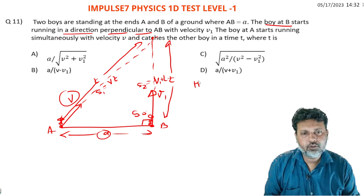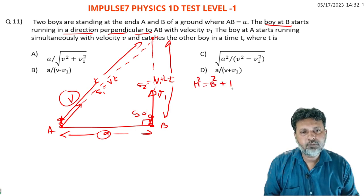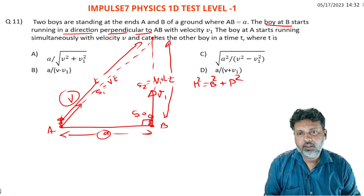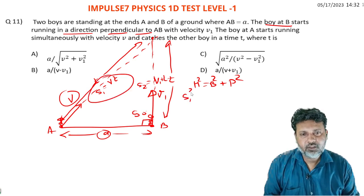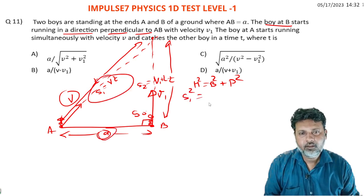Since they're at 90 degrees to each other, we apply Pythagoras theorem. The hypotenuse is the path from A, so s1 squared. This equals the perpendicular sides: a squared plus s2 squared.